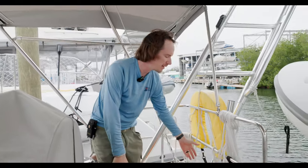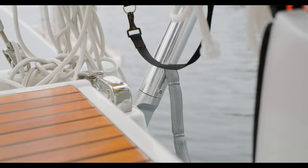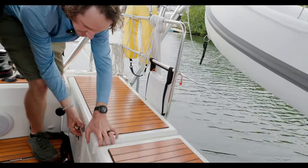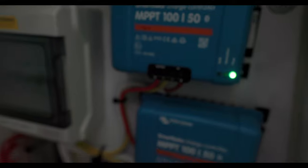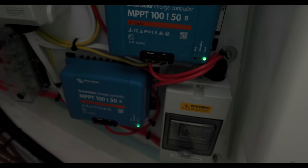Okay, so the solar wires come out of the base of the arch right here in this leg and then they go into this lazarette right here. If we open this up, we'll see the solar power wires coming in here, and then all of the breakers and charge controllers are down in this locker.